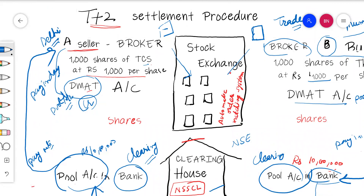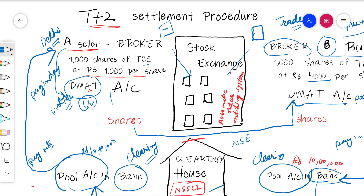In the same way, the shares from the seller were credited in the seller's broker's pool account. These shares are now transferred, and the 1,000 shares that came into the buyer's broker's DMAT account are then transferred and credited into the buyer's own DMAT account. In this way, the buyer receives the shares and the seller receives the money — settlement is complete.